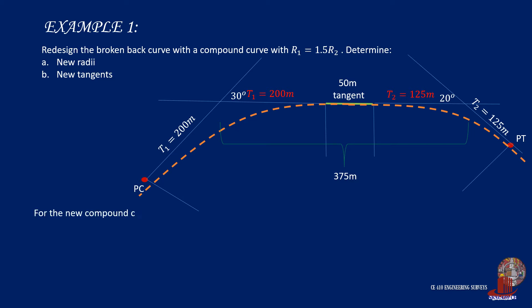For the new compound curve, we would need to designate values to the new tangents. Say x would be the new tangent for the first curve, and y the new tangent of curve 2. Going back to the curve distance we earlier computed, we can equate the new tangents x and y to 375 meters.